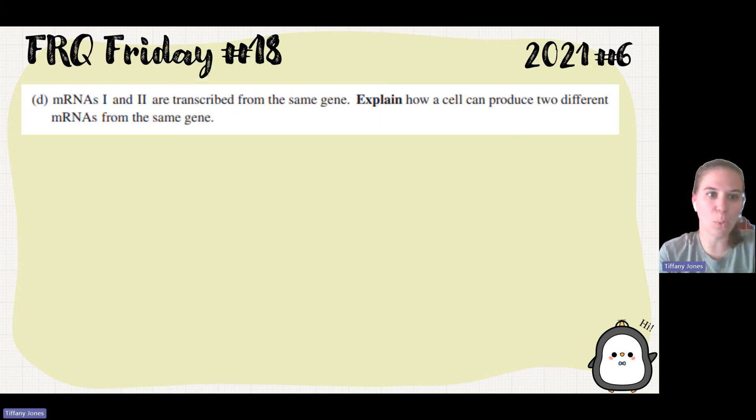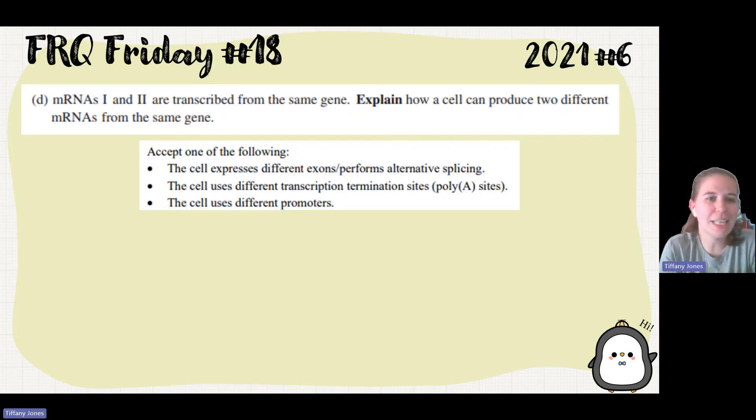So Part D says that 1 and 3 are transcribed from the same gene. Explain how a cell can produce two different mRNAs from the same gene. So they're saying that we have the same DNA strand, but we have different mRNA strands. You have to come up with why are you able to get different mRNAs from the same DNA? Well, alternative splicing. Cell expresses different exons and produces alternative splicing. Maybe there were different transcription termination sites, so different poly-A sites, or they could have used different promoters. So since there was a different promoter, they read a different gene.